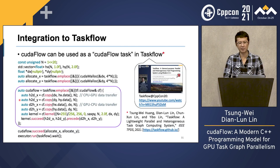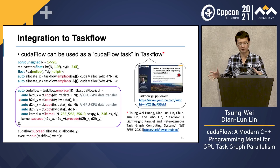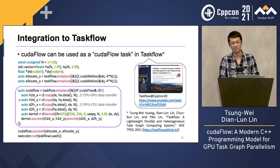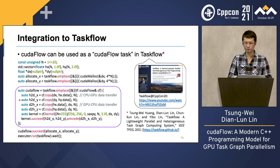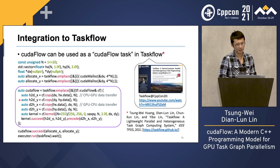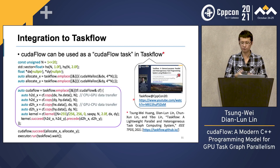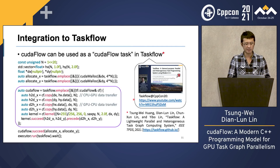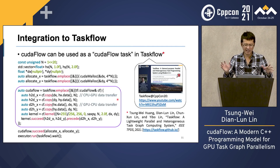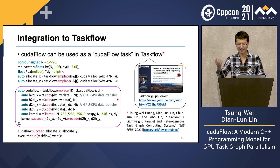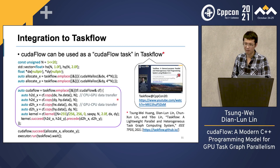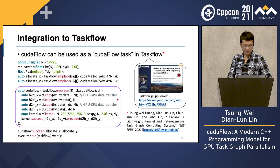Some of you know the Task Flow project developed by our research group. Task Flow is a general-purpose parallel and heterogeneous task graph computing system that gives you an end-to-end solution for expressing your parallel algorithm using task graph. The key idea is you can create a CUDA Flow task in Task Flow and glue it together with other CPU tasks, building a very complicated heterogeneous task graph and incorporating in-graph control flow to describe your parallelism in an end-to-end fashion.